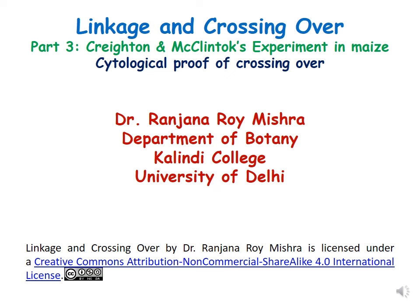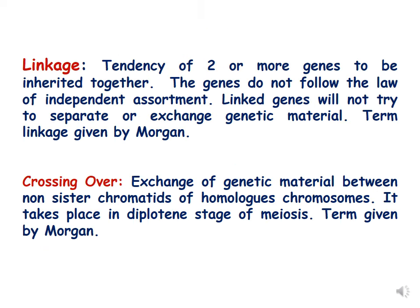Hello dear students. In this lecture we will discuss Creighton and McClintock's experiment in maize, which was a proof of crossing over. This experiment is also called the cytological proof of crossing over, and it proves that crossing over occurs at the four-stranded stage of chromosomes.